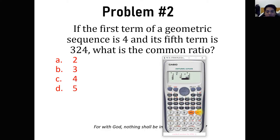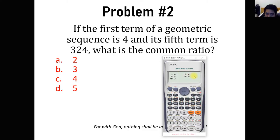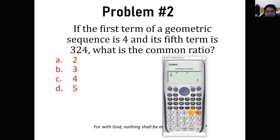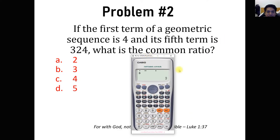Store this in the calculator by clicking AC, then SHIFT STAT, REG, number 5. This time we click B, which denotes the common ratio. Upon pressing equal, we get the common ratio. The common ratio can be found when we have at least two given values at certain positions in the sequence. In this case, the first term is 4 and the fifth term is 324, giving a common ratio of 3.